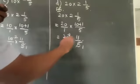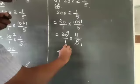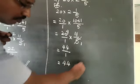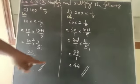Multiply the numerators: 4 × 11 = 44. Multiply the denominators: 1 × 1 = 1. The answer is 44/1, which equals 44. So 20 × 2 1/5 = 44.